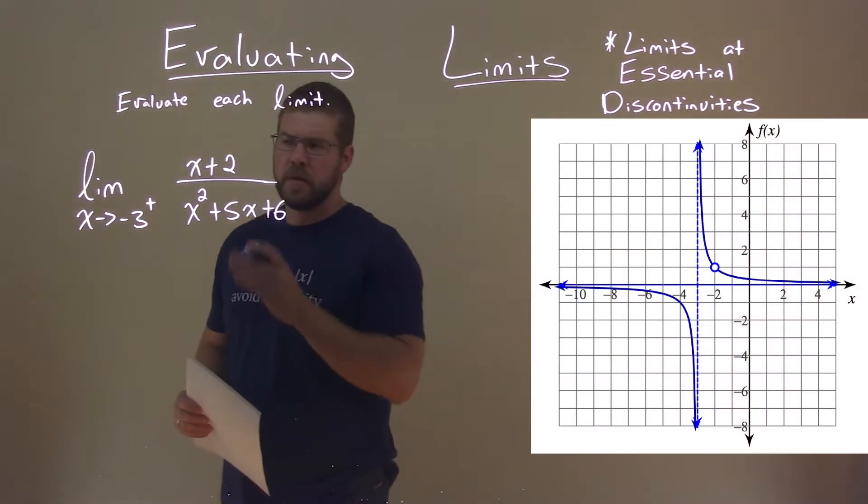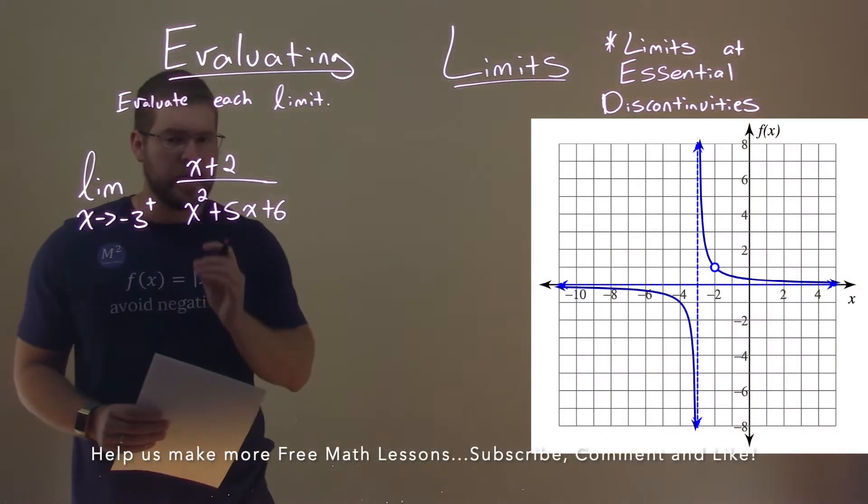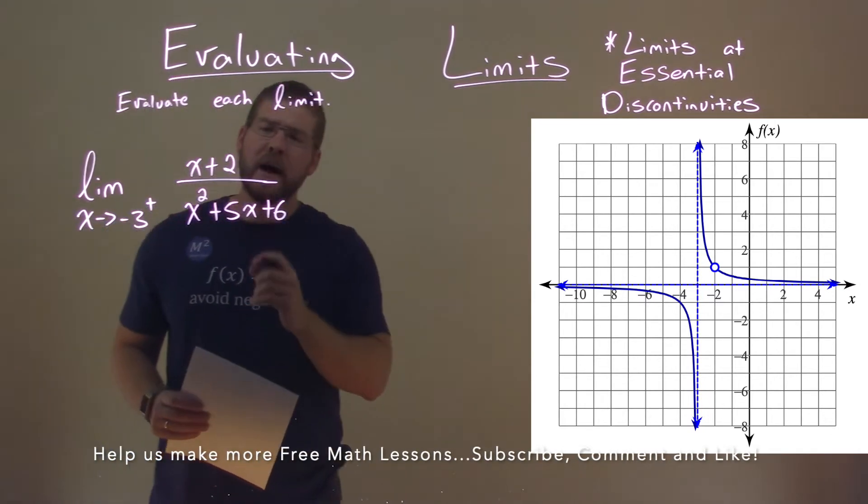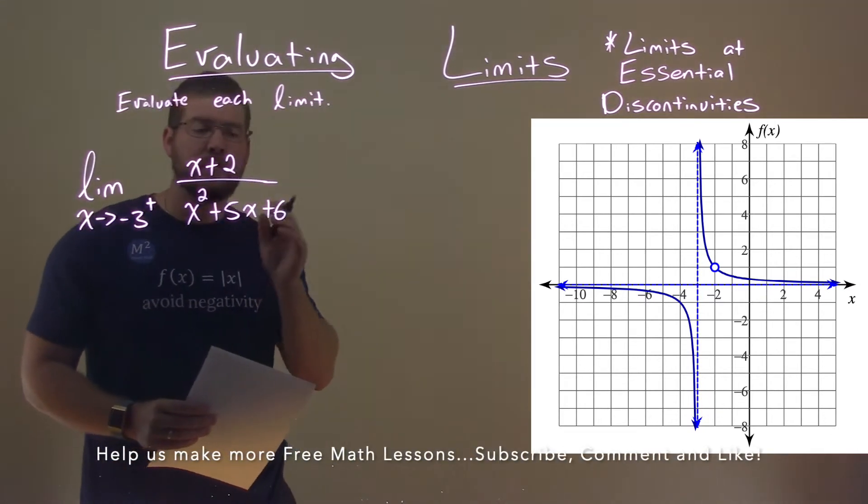We're given this problem right here. The limit as x approaches negative 3 from the right of x plus 2 over x squared plus 5x plus 6.